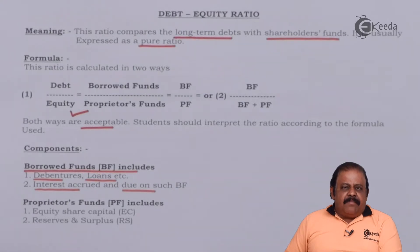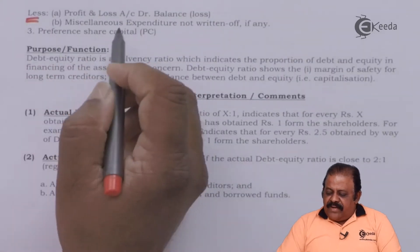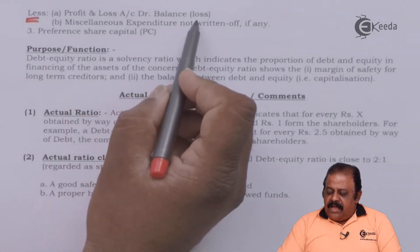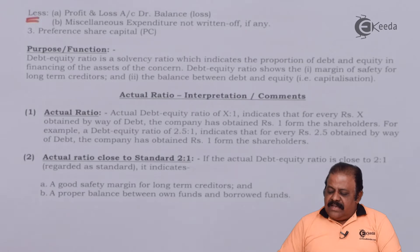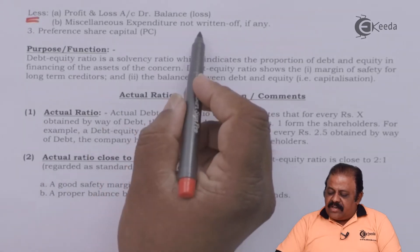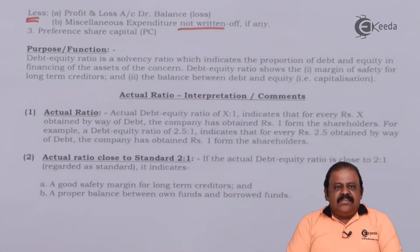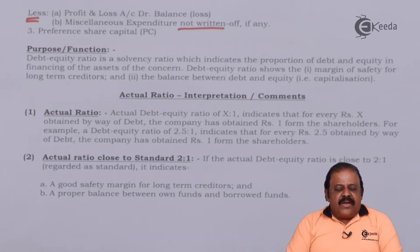Proprietors' fund includes equity share capital, preference share capital, plus reserves and surplus, minus fictitious assets such as profit and loss debit balance and miscellaneous expenditure not written off. These items are deducted from shareholders' fund so that we can calculate the amount of shareholders' or proprietors' fund.